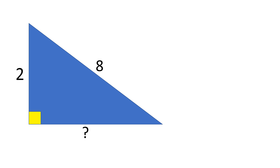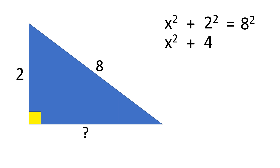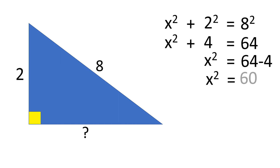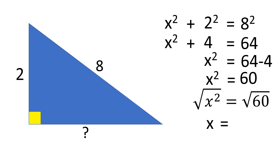Let's have another example. This time, the missing side is one of the legs. We have the given length of the leg and the hypotenuse. So let's use the Pythagorean theorem to find the missing length of the leg. So, X squared plus 2 squared is equal to 8 squared, which is the hypotenuse. So, X squared plus 4 is equal to 64. X squared is equal to 64 minus 4. So X squared is equal to 60. Take the square root of both sides; the square root of X squared is X, equal to the square root of 60.